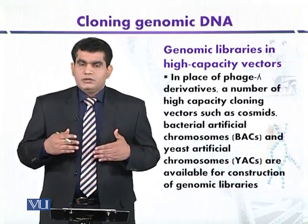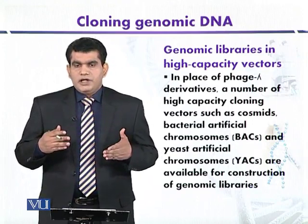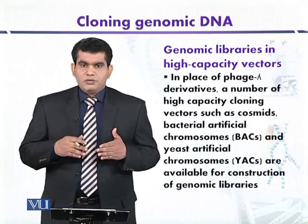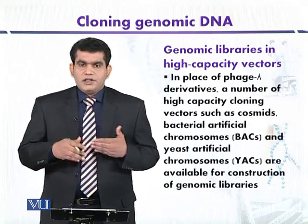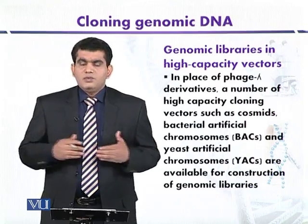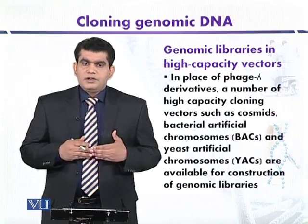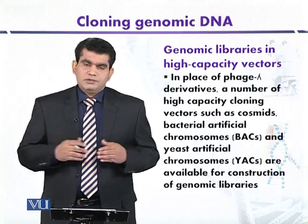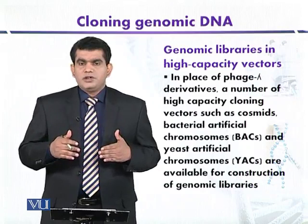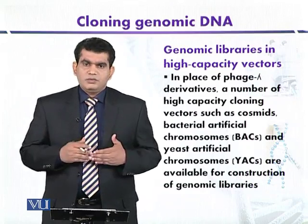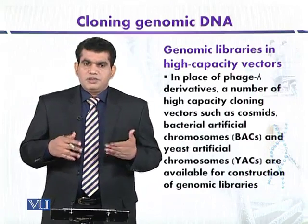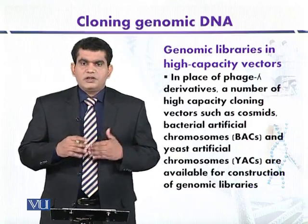We can also use high capacity cloning vectors such as bacterial artificial chromosomes or yeast artificial chromosomes, because they can clone comparatively larger DNA fragments. Bacterial artificial chromosomes can clone around 200 kilobase DNA fragments, and in the case of yeast artificial chromosomes, the DNA length may be more than 200 kilobase — up to 2000 kilobase. However, during the cloning procedure there may be some difficulties because of the large DNA fragments, so it is not always preferred.